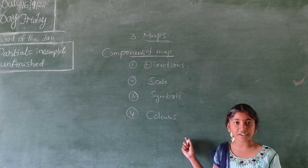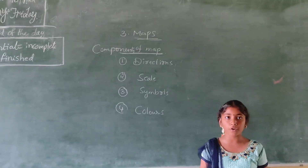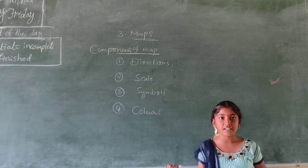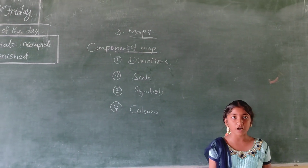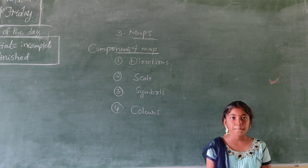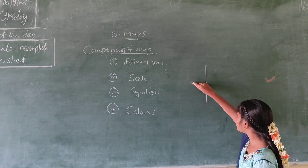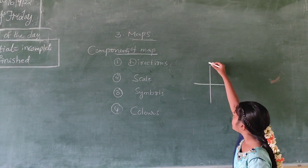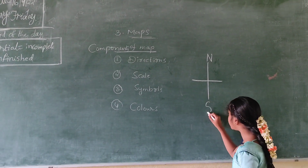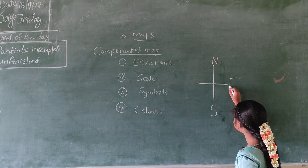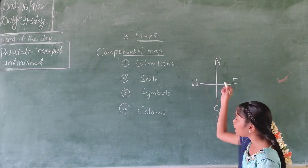Now we are discussing about directions. We have four main directions. They are East, West, North, and South. This is North direction, this is South direction, this is East direction, this is West direction.